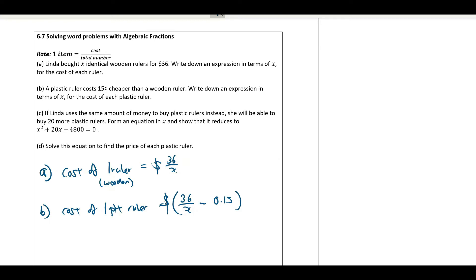For part C, part C is the crucial part that you need to form the equation. If Linda uses the same amount of money to buy plastic ruler instead, she will be able to buy 20 more plastic rulers.